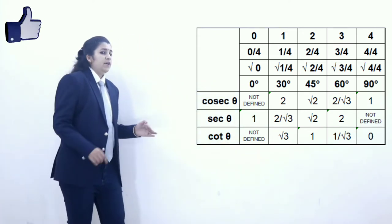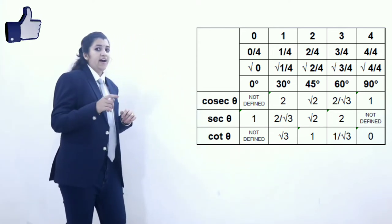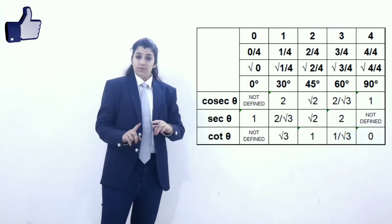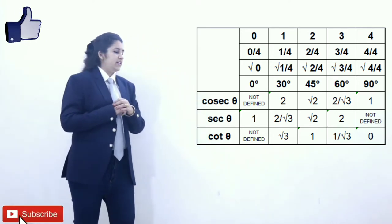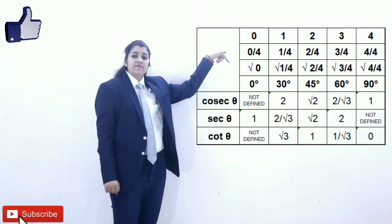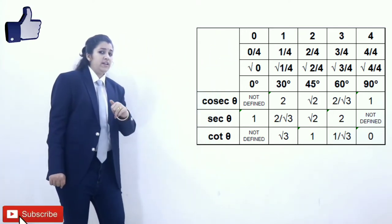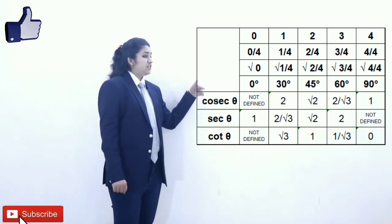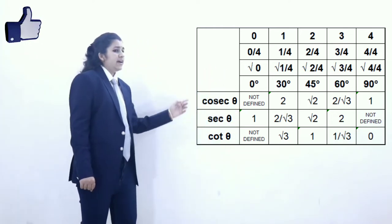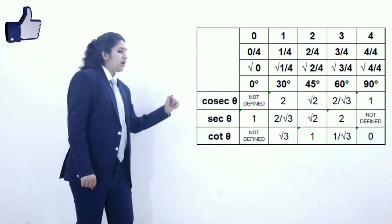Moving on further, we have discussed cosec theta and sec theta. Cosec theta is actually the reciprocal of sin theta. If we have sin theta, we will just reciprocate the values. For cosec 0, we have 1 upon 0, which is not defined.